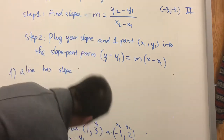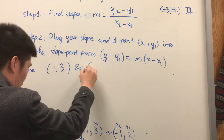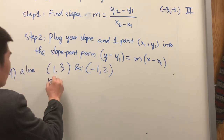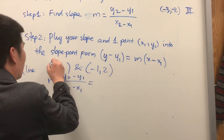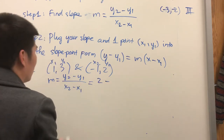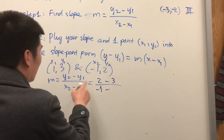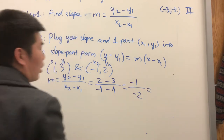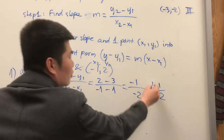So with points (1, 3) and (-1, 2): m equals (y2 minus y1) over (x2 minus x1) — y2 is 2, minus y1 which is 3, over x2 is negative 1, minus x1 which is 1. So 2 minus 3 is negative 1, and negative 1 minus 1 is negative 2. Negative 1 divided by negative 2 equals one half. This is the slope.